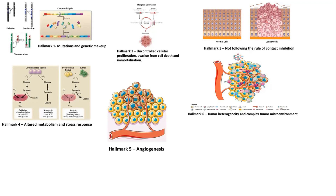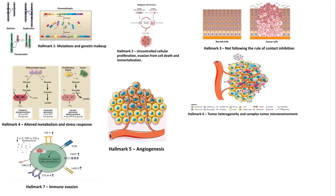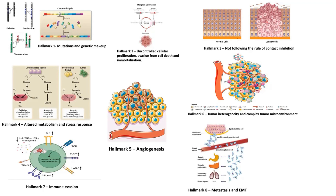Tumor cells realized that this complex microenvironment was a double-edged sword for them because a few of those uninvited immune cells were cytotoxic and killers. But by now the cancer cells had become so devious that they found methods to evade this immune response and induced the expression of inhibitory receptors in the cytotoxic cells. After winning nearly every battle, cancer cells were proud but not content. They decided to leave their territory and invaded nearby areas to bring chaos and death by using the mechanism of EMT and metastasis.